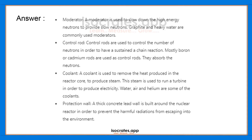A moderator is used to slow down the high-energy neutrons to provide slow neutrons. Graphite and heavy water are commonly used moderators. We slow down the neutrons because the probability of a neutron colliding with the uranium atom — to induce the fission reaction — increases when the neutron is moving slowly.